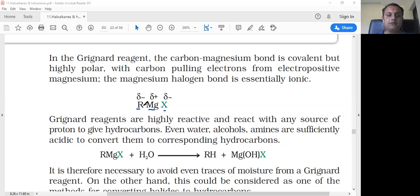Grignard reagents are highly reactive and react with any source of proton to give hydrocarbons. For example, RMgX reacts with water - hydrogen attaches to R to give hydrocarbon.